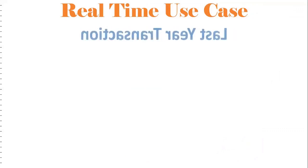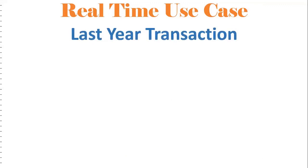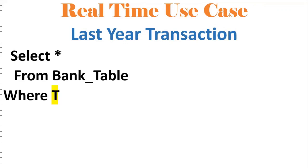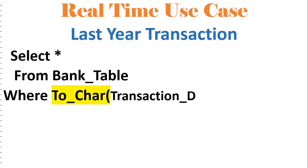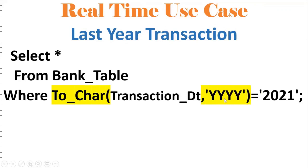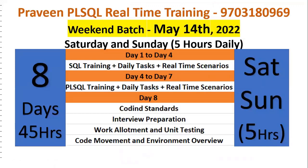Another real-time use case: extracting last year's transactions. Current year is 2022, so I need to extract 2021 data. We do SELECT * FROM bank_table WHERE TO_CHAR(transaction_date, 'YYYY') = '2021'. TO_CHAR extracts the year from the transaction date and filters for 2021. Similarly, for current month data use 'MM', or for a specific day use 'DD'. These are the real-time use cases. If you know TO_CHAR, SYSDATE, and the DUAL table, you can handle any type of requirement. If you like the content, subscribe and share the channel — thank you for watching.